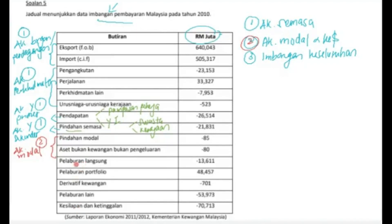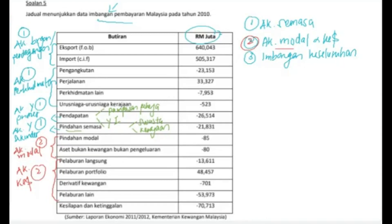Seterusnya kita ada pelaburan langsung, pelaburan portfolio, derivatif kewangan, dan lagi satu adalah pelaburan lain. Keempat-empat yang berkaitan dengan pelaburan ini sebenarnya di bawah akaun kewangan. Akaun kewangan ini juga terletak di bawah akaun modal dan kewangan. Jadi ada dua — akaun modal dan akaun kewangan.